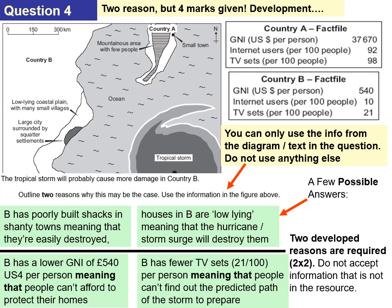This question is four marks with two points, so you must develop each point. Country B has poorly built shacks in shanty towns, meaning they're easily destroyed — that's one mark. To develop it: country B has a lower GNI of 540 US dollars per person, meaning that people can't afford to protect their homes. That gives you a 'meaning that' and some data to support your answer.